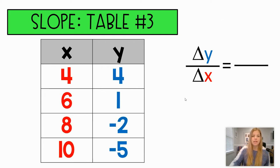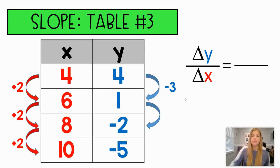Okay, for this one, the change in x was adding by twos. The change in y was subtracting by three. So my slope is negative three over two. Next one.